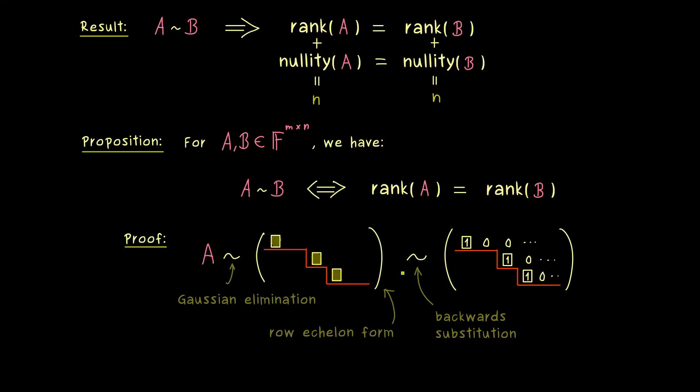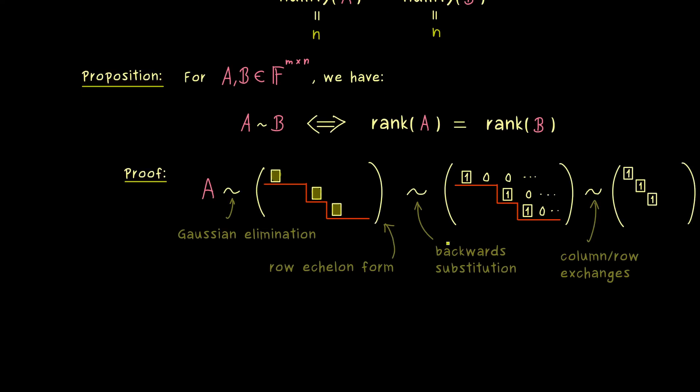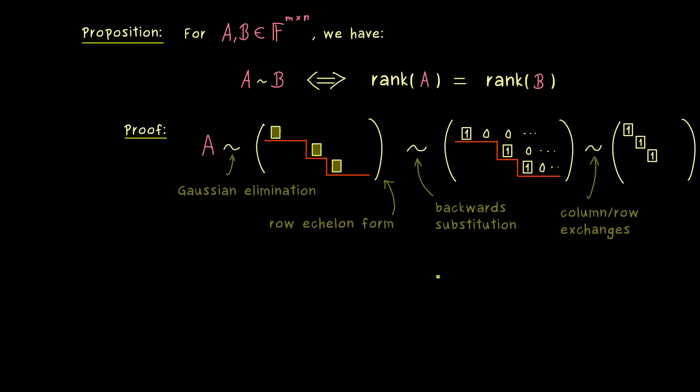Therefore the important part here is that we still get out an equivalent matrix. And then you see, in the last step we can also do a column exchange, which is also given by multiplying with an invertible matrix. More precisely, this is given by a permutation matrix, which is always invertible.